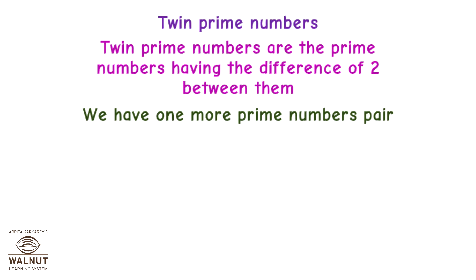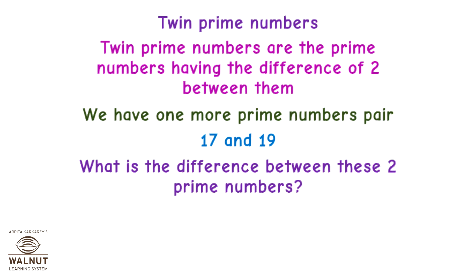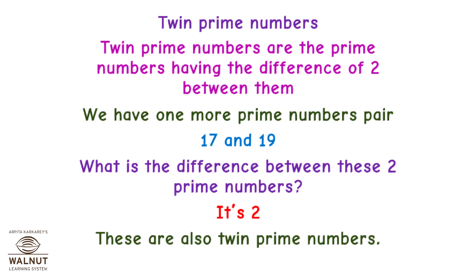We have one more Prime Numbers pair, 17 and 19. What is the difference between these two Prime Numbers? It's 2. These are also Twin Prime Numbers.